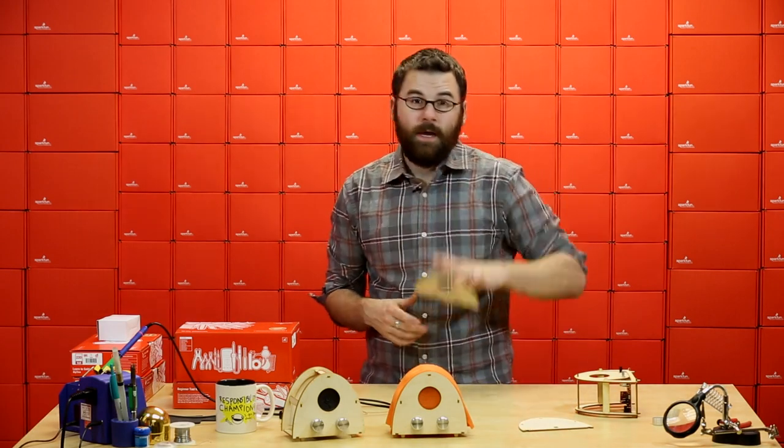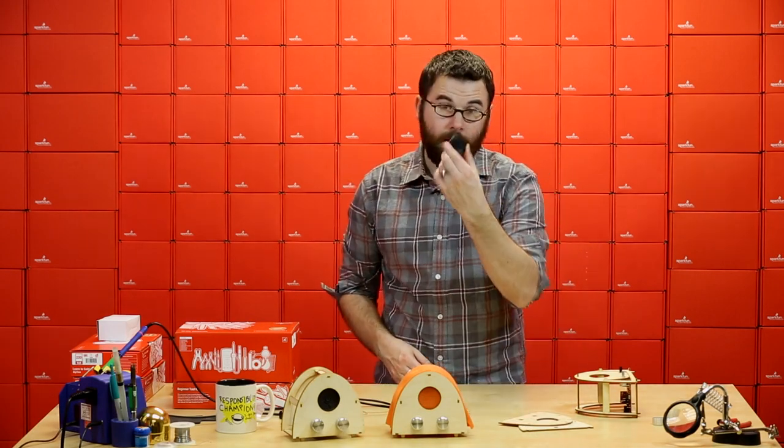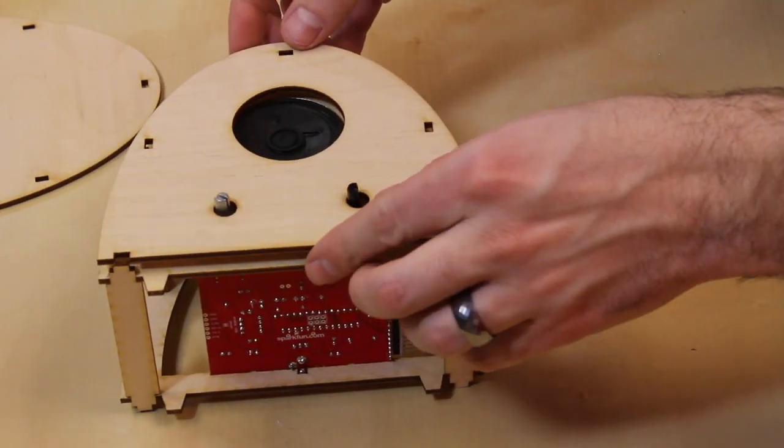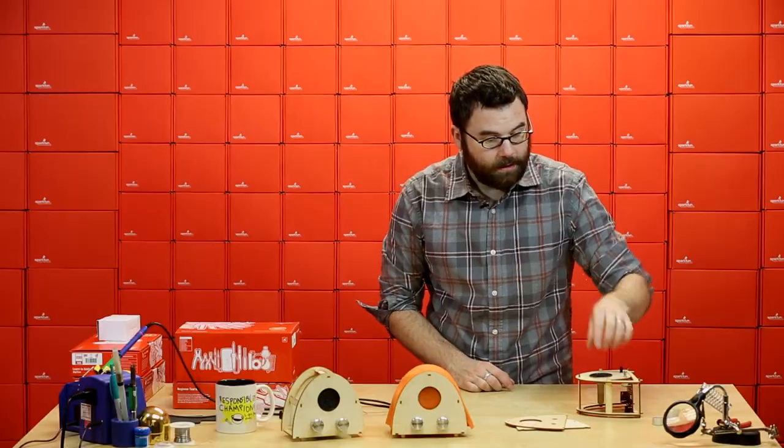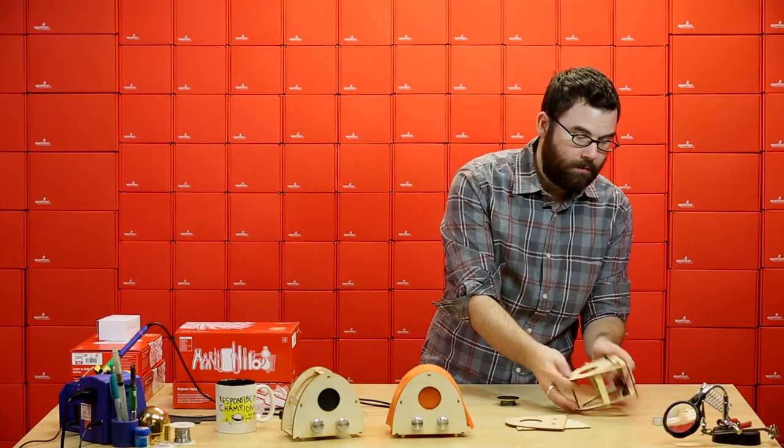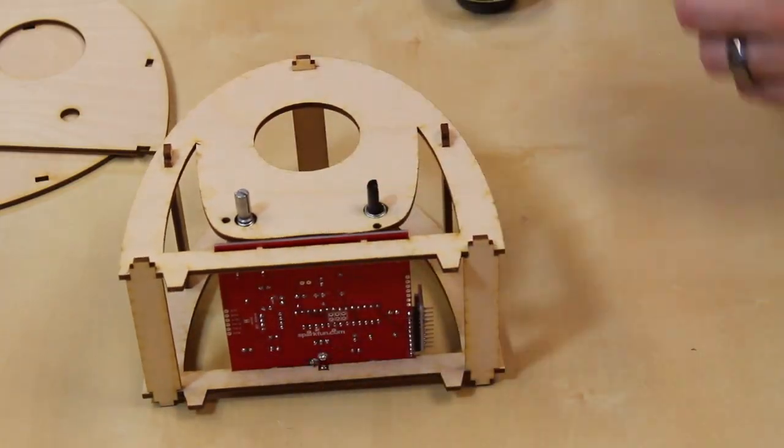So before we put on the front face we're actually going to put the speaker in. The speaker basically just sits down in like that and then this piece goes on to hold it in place. In addition to just placing the speaker in there we actually need to cut off some wire and solder that into the bottom of the PCB right there.